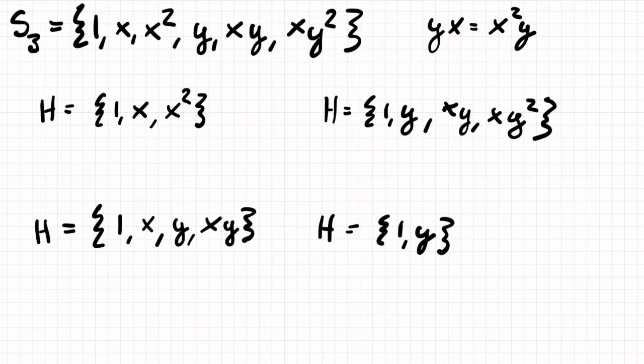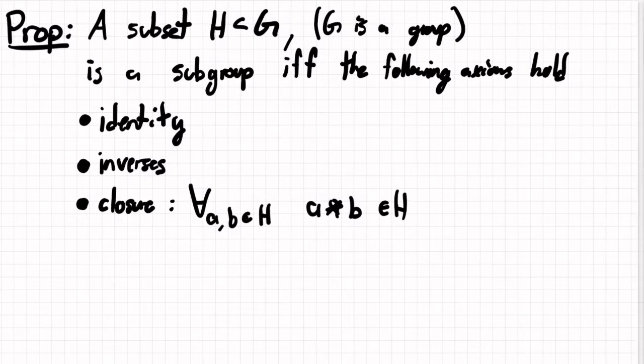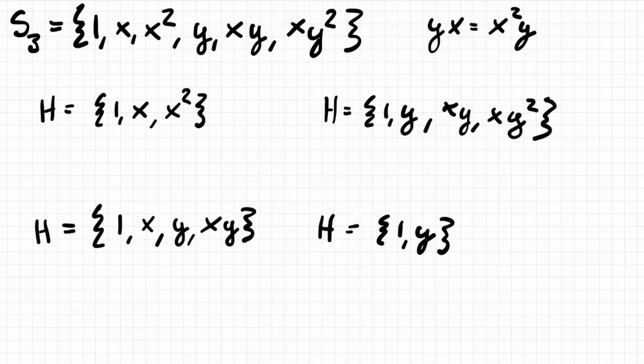So the things that we need to check are: the identity element has to be contained in the subset, the subset has to have inverses, and there has to be this closure axiom, meaning that if we multiply two things in our set, then we get something else in our set H.